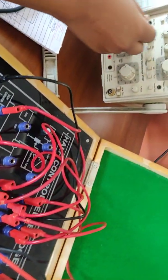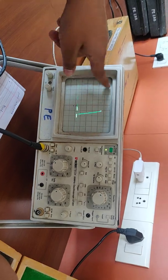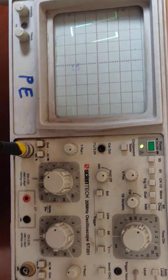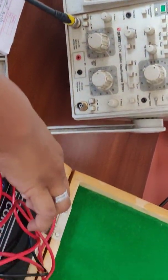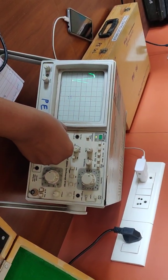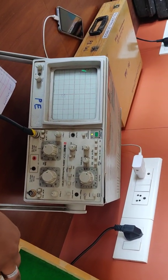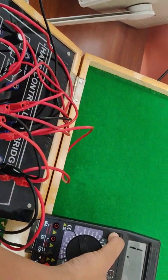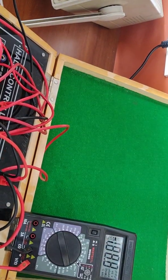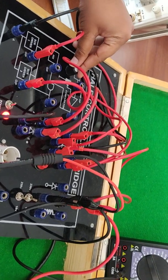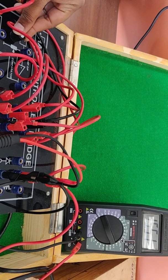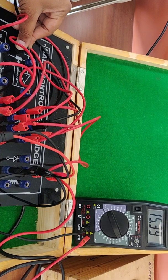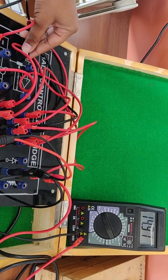As you can see the value of alpha will be changed accordingly with the help of the ramp signal, that is we are using the potentiometer here. Now using the potentiometer we are varying the alpha.